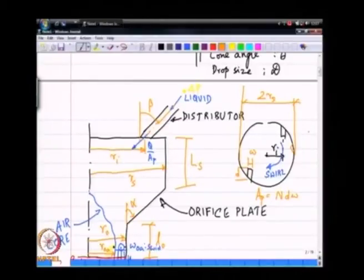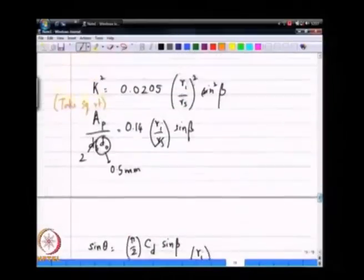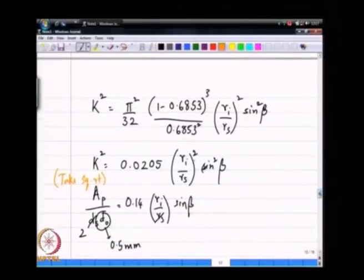Some practical issues related to manufacturability overtake efficiency considerations and therefore, you have to live with ri over rs typically on the order of about 0.6 to 0.7, you cannot really go beyond that. Sin beta also has a bearing as you can see.